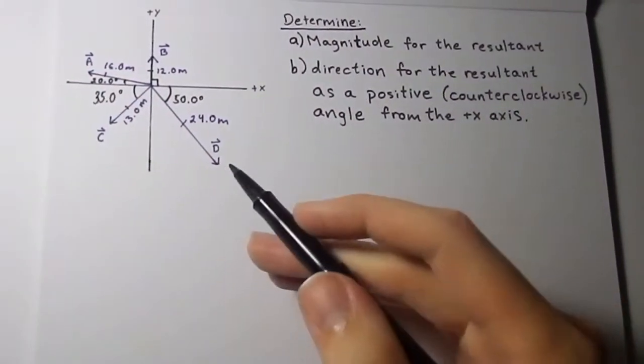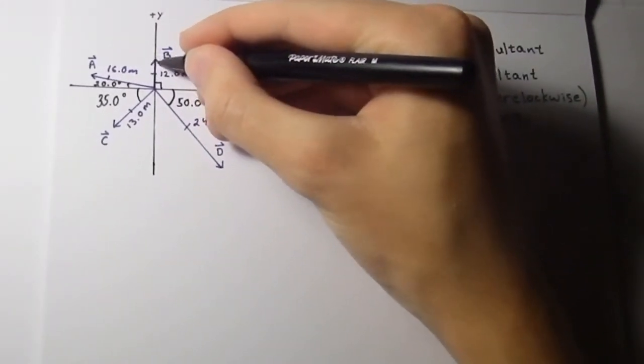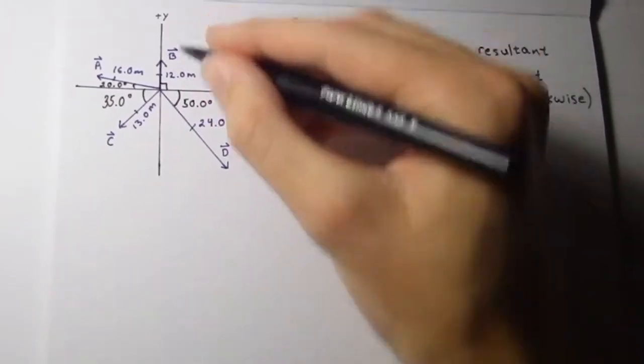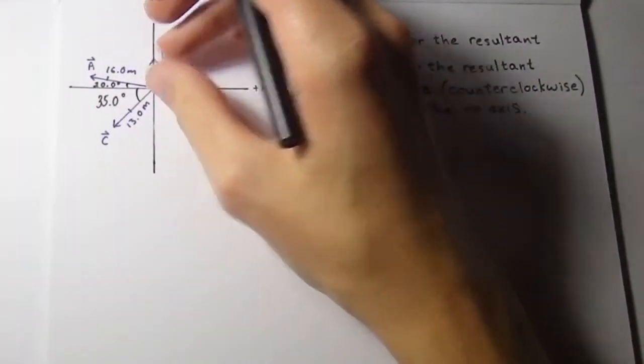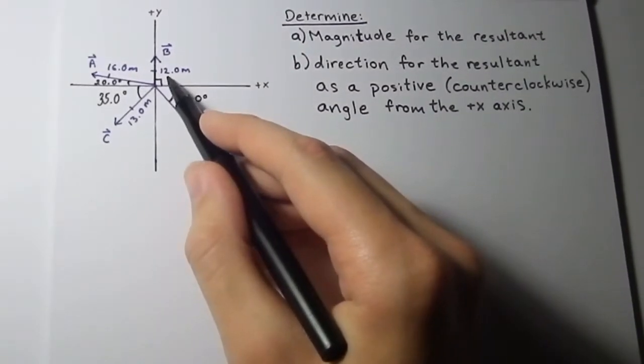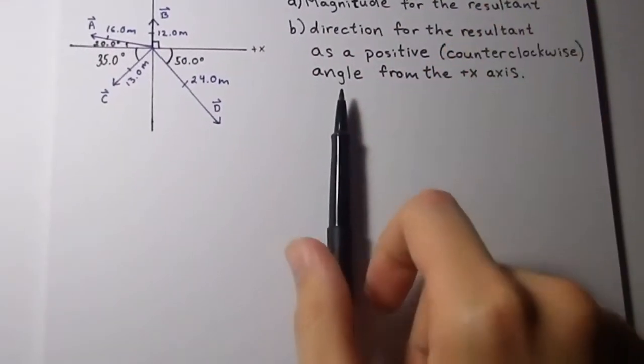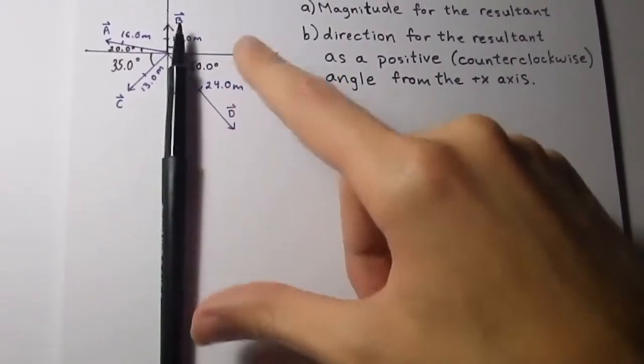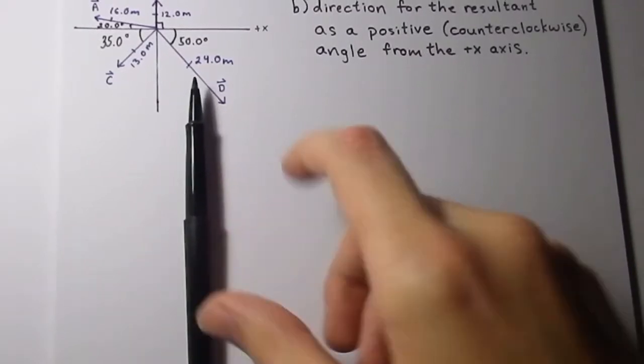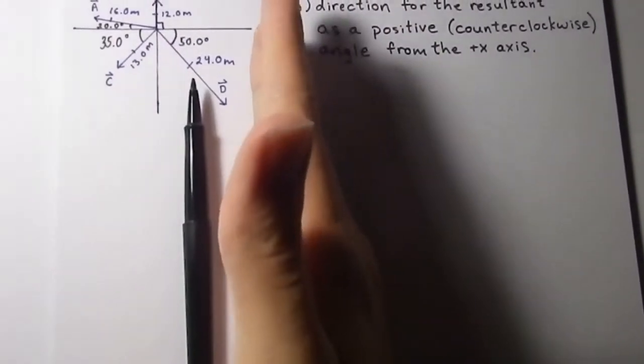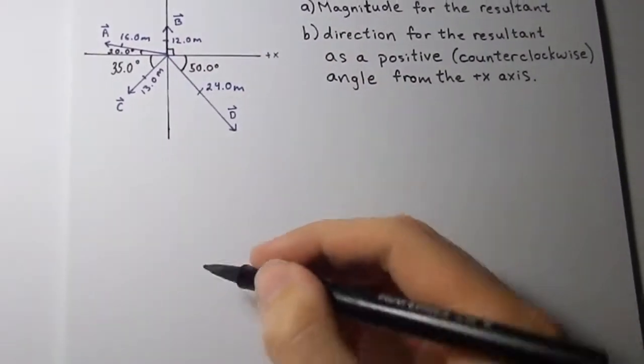But you have to slide these vectors over. Now, vectors show both magnitude and direction. They both matter. The direction of this B vector, for example, points up for a reason, and it's this length because it specifically describes 12.0 meters. That's all that matters with vectors. If you slide the vectors, when I slid this vector from here to here, did I change the direction? No. Did I change the size? No. So it's perfectly all right to slide vectors.